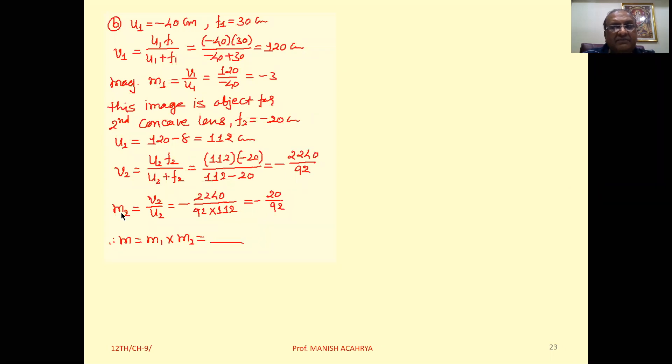Then magnification by the concave lens M2 equals V2 by U2. V2 we have calculated, U2 is 112. So magnification by the concave lens is obtained. The resultant magnification by the lens system is M1 into M2, which is minus 3 into minus 20 by 92. You will get the resultant magnification.